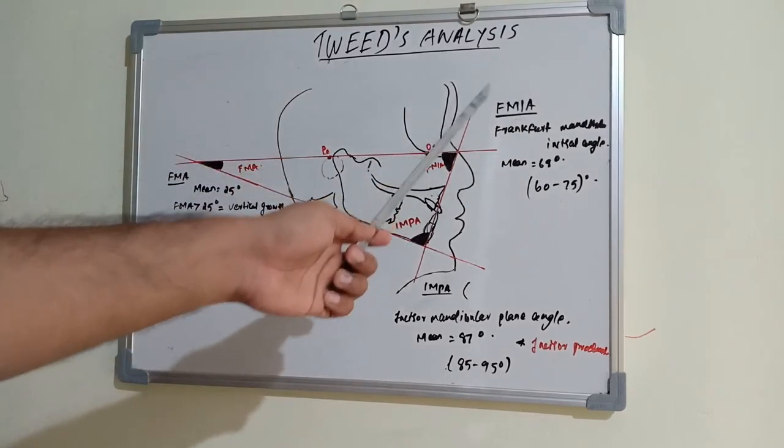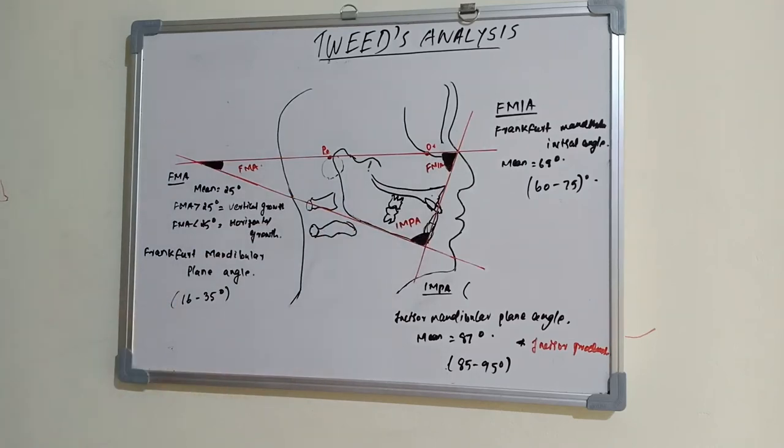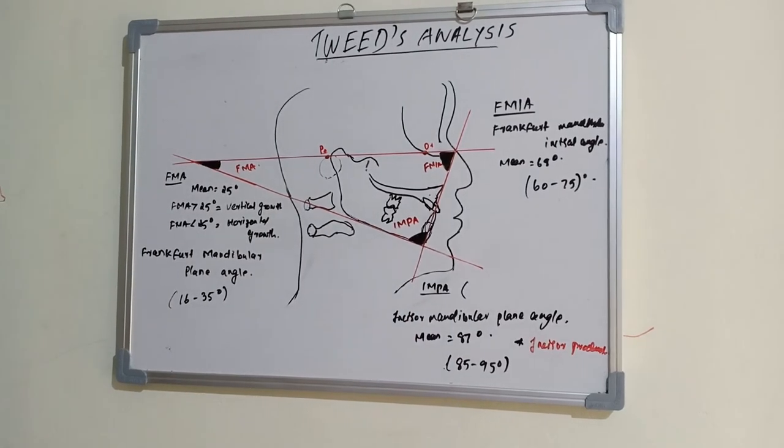Frankfurt Mandibular Incisor Angle, that is joining by the Frankfurt plane and the same lower incisor plane, which indicates the degree of balance and harmony between the lower face and the anterior limit of dentition. The mean value is 68 degrees, which ranges from 62 to 75 degrees.